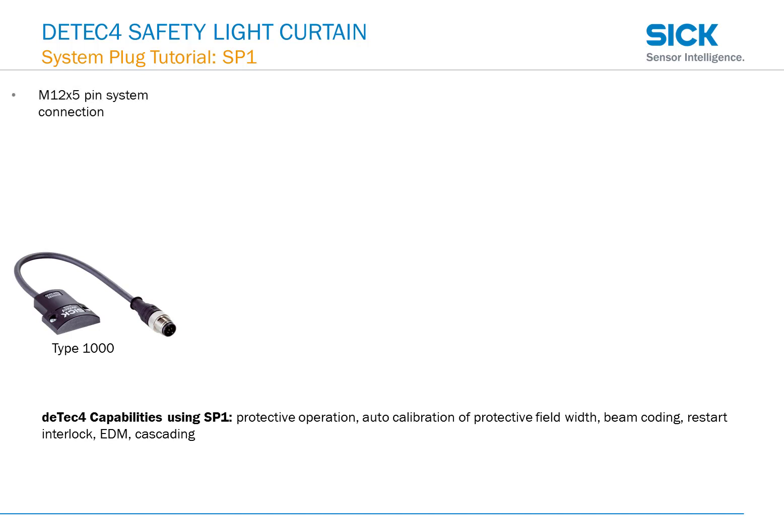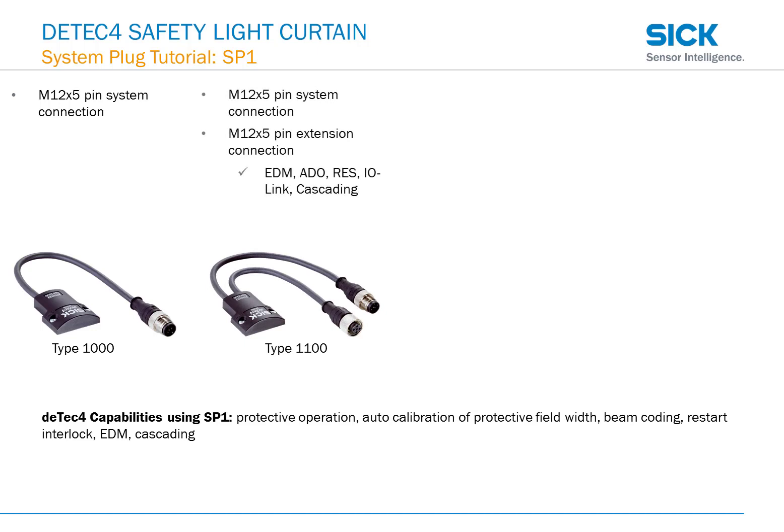Type 1000 has an M12 by 5 pin system connection. Type 1100 has an M12 5 pin system connection and a 5 pin extension connection, which allows for EDM, ADO, reset, ILINC, and cascading.